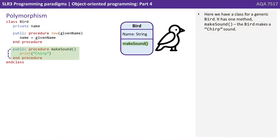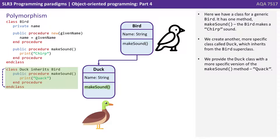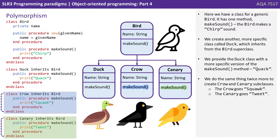Here we have a very simple class for a generic bird. It has one method, make sound, and the bird makes a chirp sound. We've created another, more specific class called duck, which inherits from the bird class. We provide the duck class with a more specific version of the make sound method: quack. We do the same thing twice more to create a crow and a canary subclass — the crow goes squawk and the canary goes tweet.